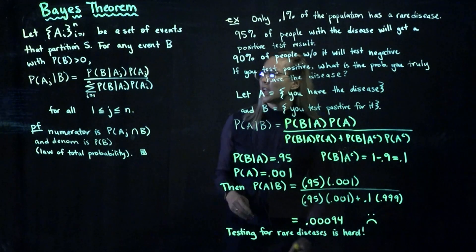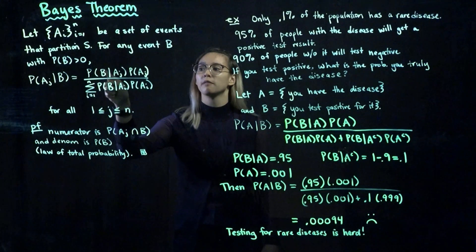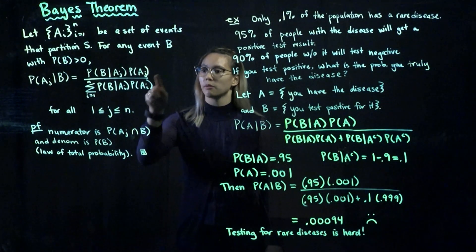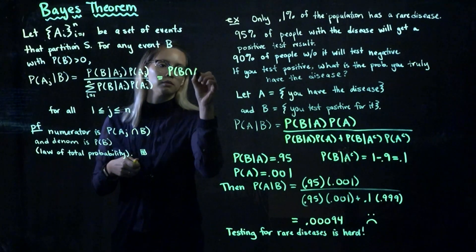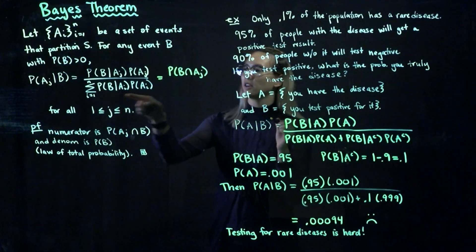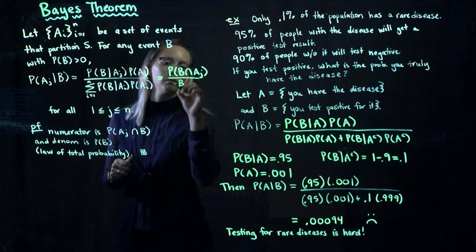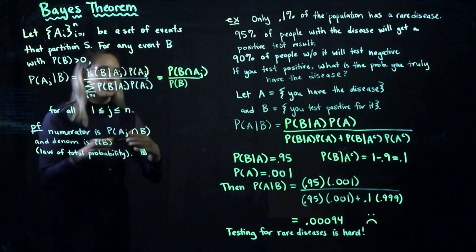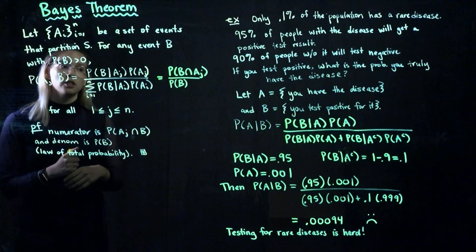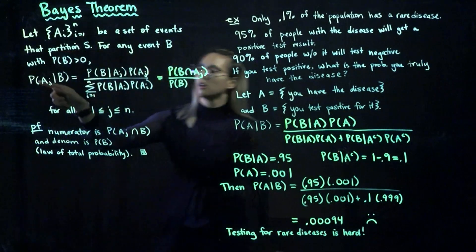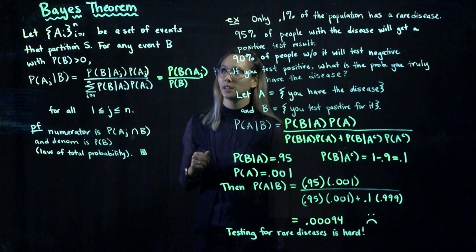So what is the proof here? If we look at our numerator, we can see that this is the probability of B intersect Aj. And then in the denominator, this is the law of total probability — this is the probability of B. So we have the probability of B intersect Aj divided by the probability of B, which is just our definition of conditional probability: the probability of Aj given B. So this is our proof for Bayes' theorem.